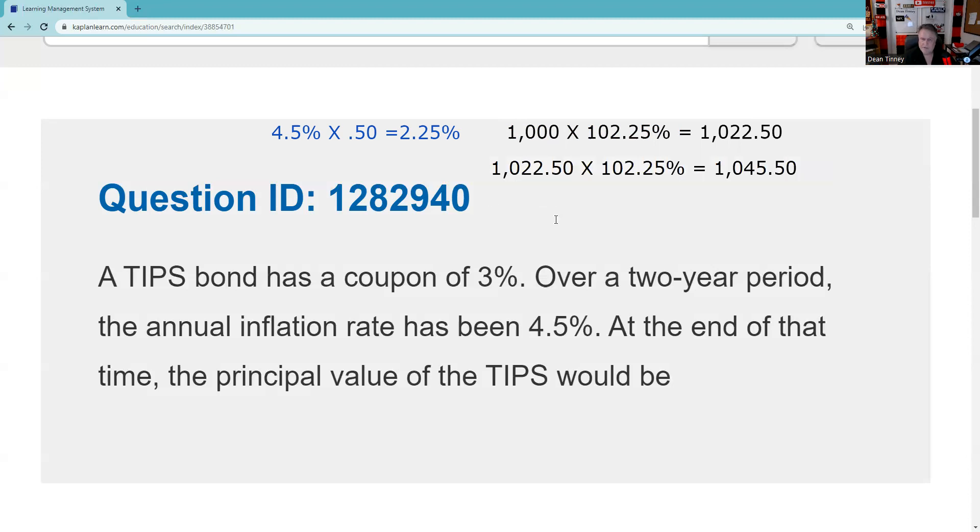And then I'm going to make my third adjustment, right? I'm making four adjustments. So $1,045.50 times 102.25%. So $1,045.50 times 102.25%. And I get $1,069.02. So that's my third adjustment.